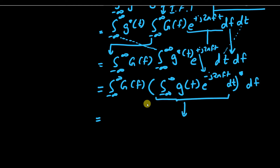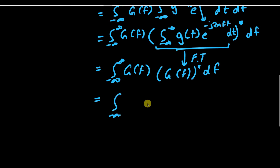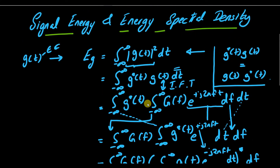The inner integral is simply the definition of the Fourier transform. So we have G*(f) integrated with G(f) df from minus infinity to infinity, which gives us the integral from minus infinity to infinity of |G(f)|² df. This is the well-known Parseval's theorem.